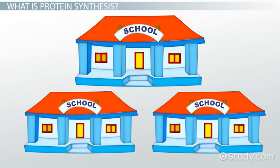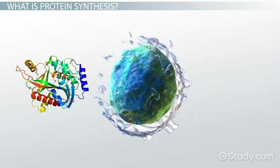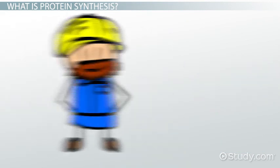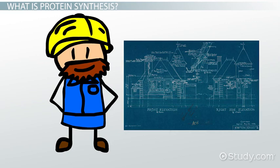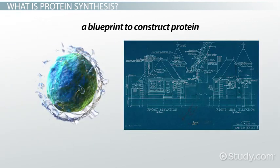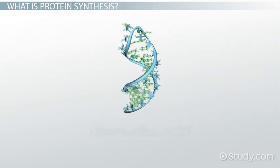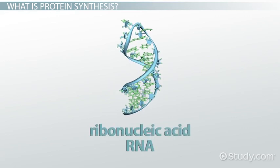Communities need schools to grow and thrive, and cells need proteins for the same reason. And just as workers need a blueprint to complete a project, cells need a blueprint to construct protein. This blueprint is called ribonucleic acid, or RNA.